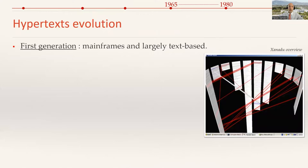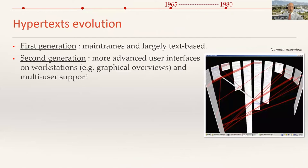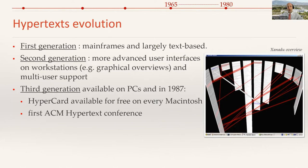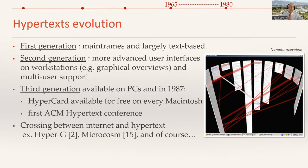Over a period of 20 years, we can see several evolutions in hypertext. The first generation was mainly on mainframes and largely text-based. The second generation was more advanced in terms of user interfaces, working on workstations with graphical capabilities, providing new interfaces, graphical overviews, and multi-user support. The third generation was available on PCs — in 1987, HyperCard was available for free on every Macintosh, and it was also the first year of the ACM Hypertext Conference. One very important thing during the third generation was the crossing between the internet and hypertext, with projects such as HyperG, Microcosm, and of course, the web.